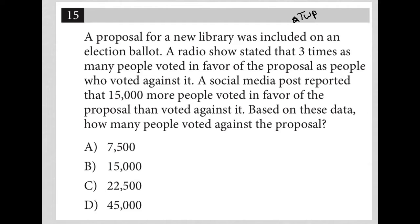The first sentence says a proposal for a new library was included on an election ballot — nothing to write down there. The next sentence says three times as many people voted in favor of the proposal as people who voted against it. So I'm going to say x equals against. We don't know that number yet, but we do know that three x — three times the number who voted against — voted for. That's my translation so far.